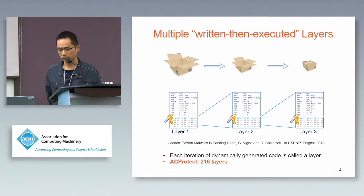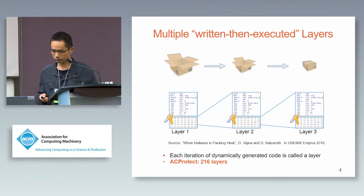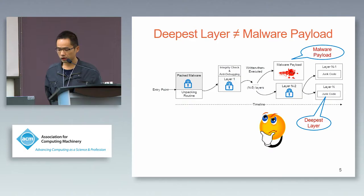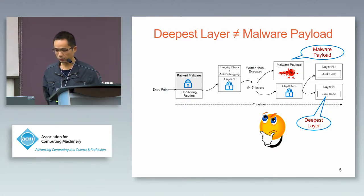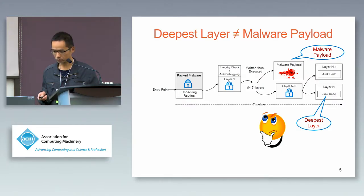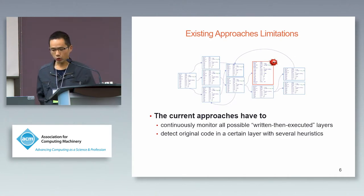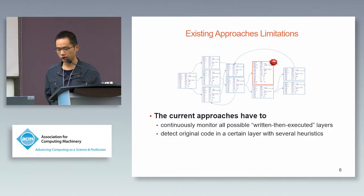For example, the ACProtect packer has more than 260 layers. However, there is no silver bullet that can sharply determine the end of multiple-layer unpacking, because it has been proved to be an undecidable problem. For example, the malware payload is not necessarily in the deepest layer.